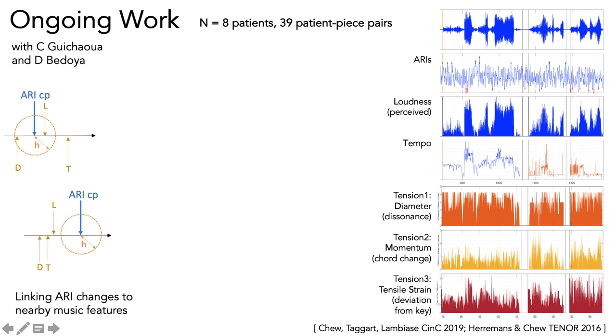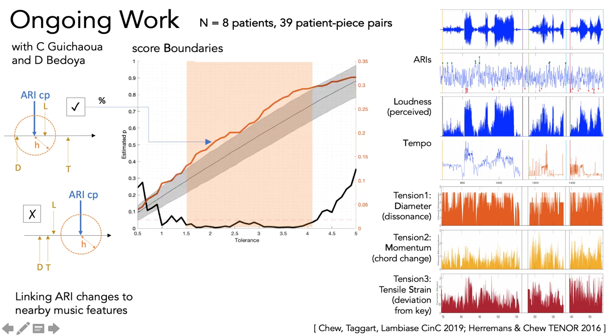For changes in specific music features that can be associated with that ARI change point. The two diagrams here show successful and unsuccessful tries at finding music feature changes near ARI change points. Based on a large number of simulations, we have the proportion of random ARIs that are associated with the music feature changes.